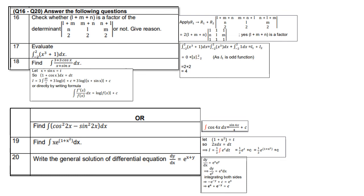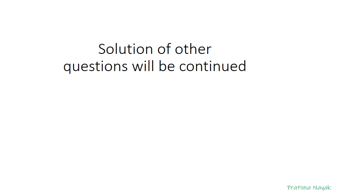Question 20: write the general solution of dy/dx = e^(x+y). Note that e^(x+y) = e^x · e^y. Separating variables: e^(−y) dy = e^x dx. Integrating both sides: −e^(−y) = e^x + constant, or e^x + e^(−y) = C. Friends, with your request I completed these questions and the other questions' solutions will be continued. Thank you.